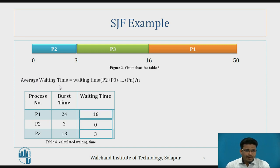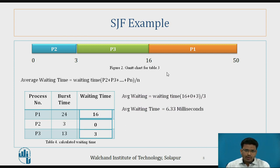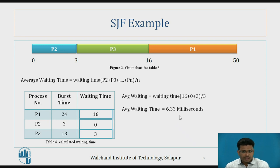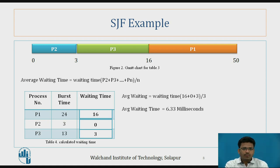Now P1 is going to execute, so P1 has a waiting time of 16. The average waiting time equals (16 + 0 + 3) divided by 3, which gives 6.33 milliseconds. If we compare this with another scheduling algorithm, the average waiting time may differ. In this way the SJF scheduling algorithm works.